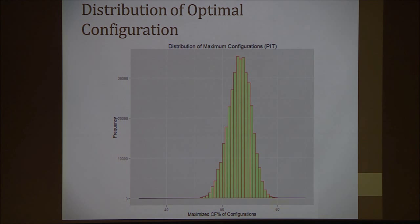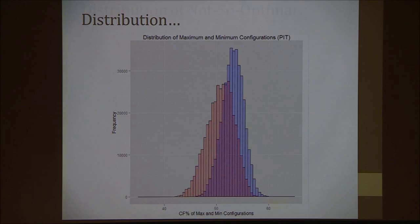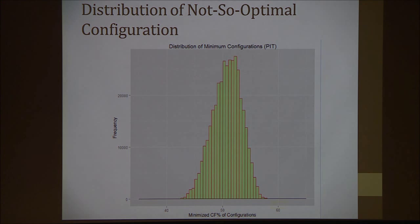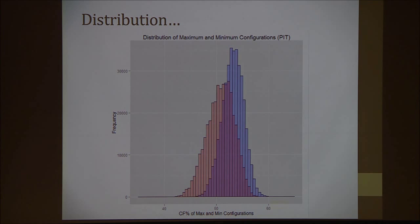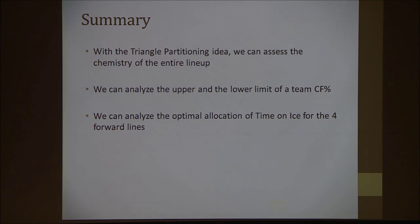Just by allocating the maximum possible amount of time on ice, and conversely, even if you have the best lineup for the players, if you allocate the worst amount of time for the four lines, you should still be able to get around 58%. Combining those two is a pretty good indicator of what the general mean should be. So in summary: with the Triangle Partitioning idea, we can assess the chemistry of the entire lineup, analyze the upper and lower limits of team Corsi C4 percentages, and analyze the optimum allocation of time on ice for the four forward lines. And Brendan Sutter is not a good player. Thank you.